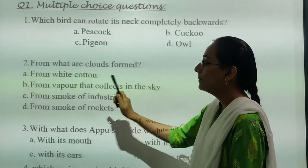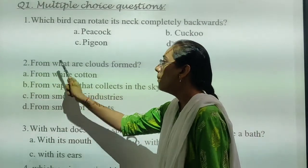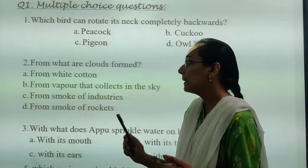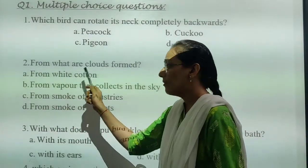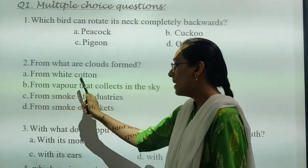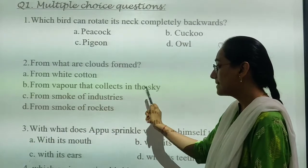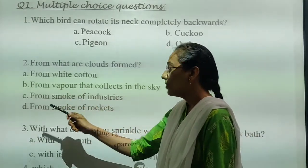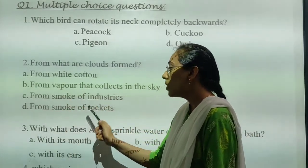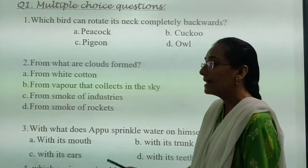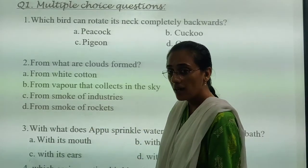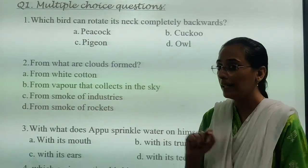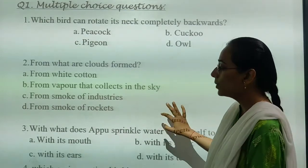Next: what are clouds formed from? How are clouds formed? The options are: from white curtain, from vapors that have collected in the sky, from smoke of industries, or from smoke of rockets. Clouds are formed from vapor, right? Write the answer yourself.